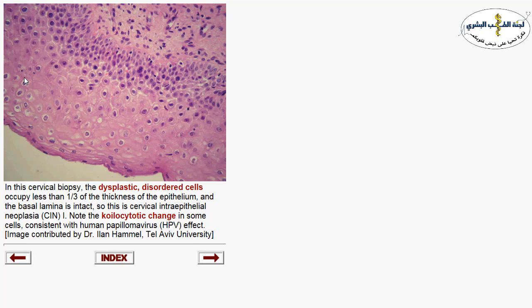Here you can also see koilocytic changes associated with HPV viral infection, showing perinuclear clearing and nuclear indentation. The dysplastic changes are reaching and involving two-thirds — the bottom two-thirds of the epithelium — making this cervical intraepithelial neoplasia grade two.